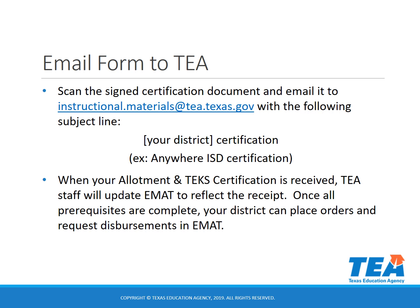When your allotment antiques certification is received, TEA staff will update EMAT to reflect the receipt. Once all prerequisites are complete, your district can place orders and request disbursements in EMAT. Other prerequisites that districts are responsible for include updating your district's contacts, shipping addresses, and providing three sets of summer ship dates.